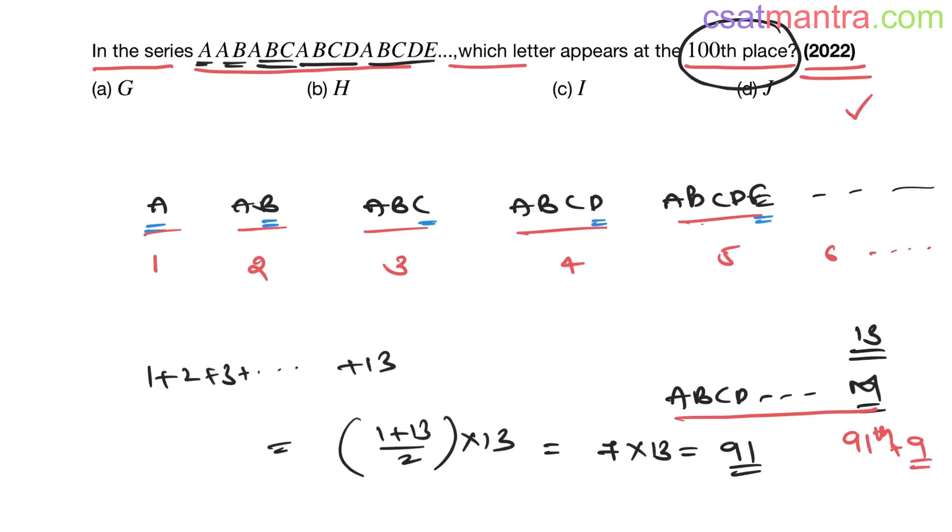So start again from A, ABCD... So I would be the ninth letter. You can check, number of letters we have till twelve letters group. In that case the sum would be thirteen by two into twelve, that is thirteen sixes, so that is seventy-eight.